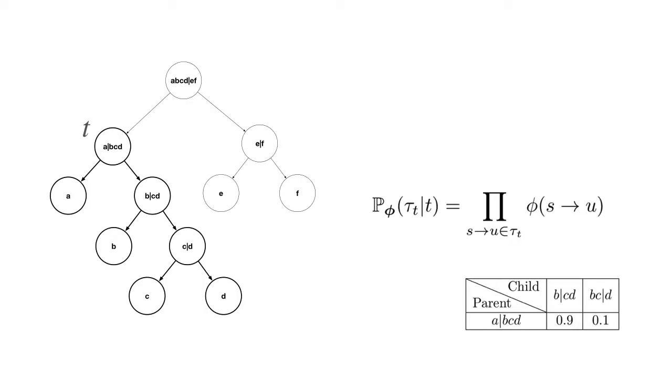To illustrate, suppose we have this tree on 6 taxa. We can compute the probability of the subtree rooted at T. Here T is a subsplit that splits clade A, B, C, D. And we express this as a conditional probability with the conditioning given by the value of subsplit T. So this tree here, the subtree has probability of 0.9.